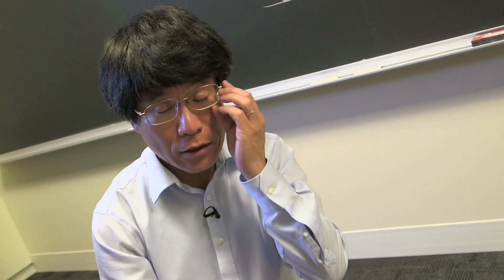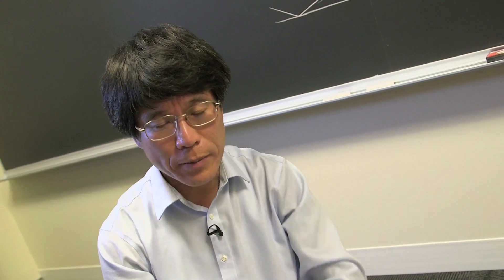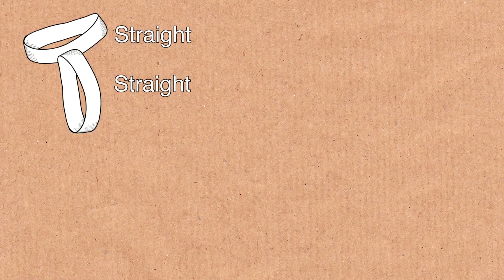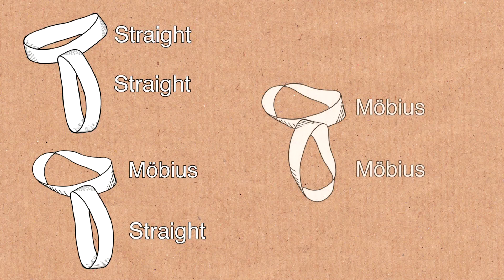Not only straight ones, but also we would like to glue Möbius strips. So there are four possibilities: straight against straight, straight against Möbius, and Möbius against Möbius.